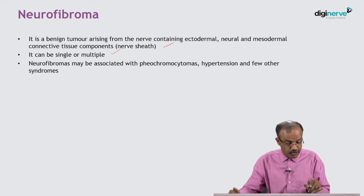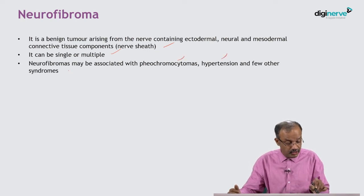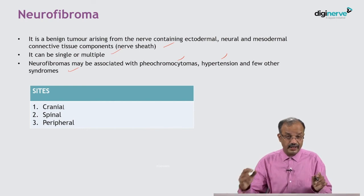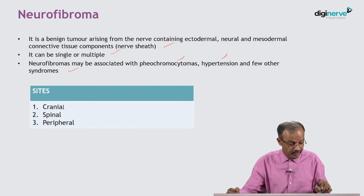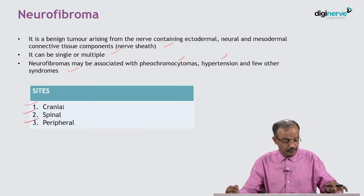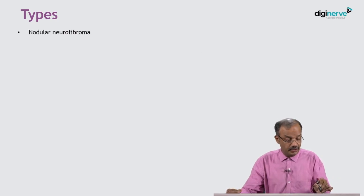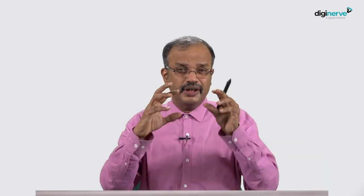Neurofibromas may be associated with pheochromocytoma, hypertension, and a few other syndromes. Remember the sites: cranial, spinal, and peripheral. The types are nodular neurofibroma and plexiform neurofibroma.